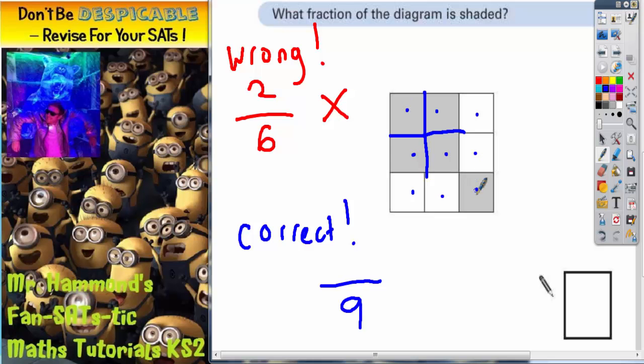And we've got 1, 2, 3, 4, 5 shaded in. So actually the correct answer that we're looking for is 5 out of 9 or 5 ninths. And that's what we need to write in the answer box.